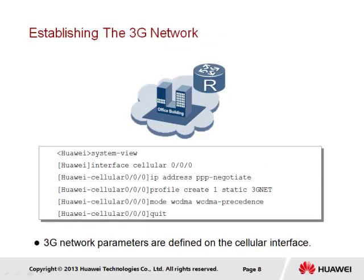To allow the router to operate as a failover device, we must configure the device to support connectivity over the router's cellular interface. Recalling from the configuration of PPPoE services, the IP address PPP negotiate command implements the use of the IPCP protocol to negotiate a remote IP address with the peering device. A profile may also be created that specifies the access point name, which is basically the gateway for the 3G network. We additionally set the mode, clarifying that we wish to connect using the WCDMA standard.